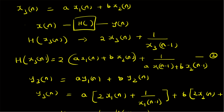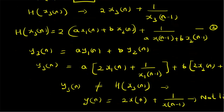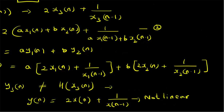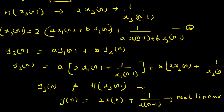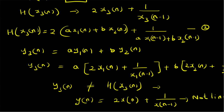We also defined y3(n) as the linear combination of the corresponding outputs: a times (2·x1(n) + 1/x1(n-1)) plus b times (2·x2(n) + 1/x2(n-1)). When we compare y3(n) with h(x3(n)), they are not equal, specifically because of the second component in the system. Therefore, y(n) = 2x(n) + 1/x(n-1) is a non-linear system.